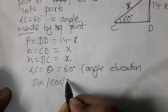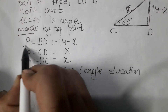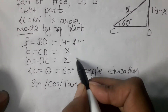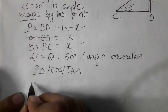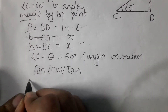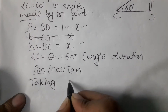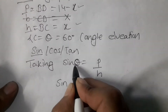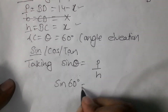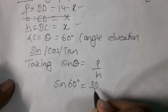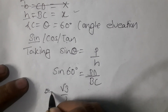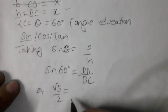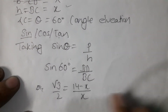We will use sin θ = p/h. Sin 60 degrees equals BD over BC. The value of sin 60 is root 3 over 2. BD is 14 minus x and BC is x. So we have root 3 over 2 equals 14 minus x over x.